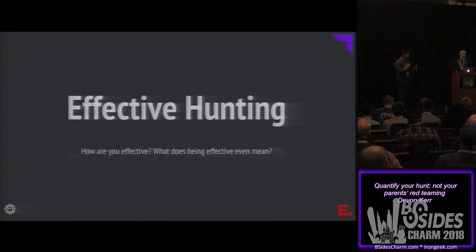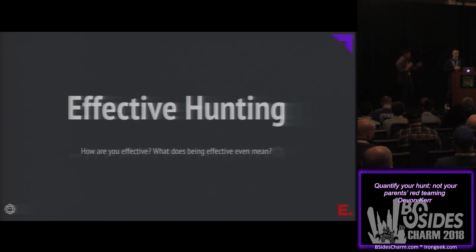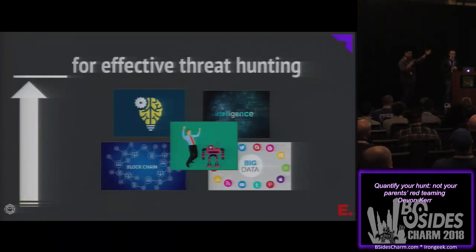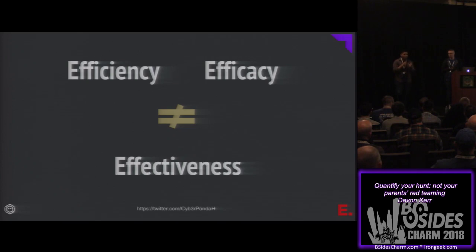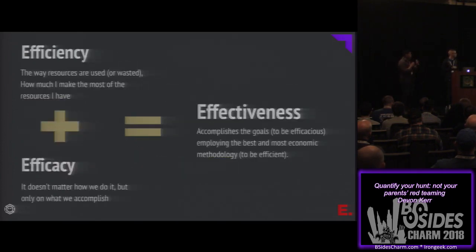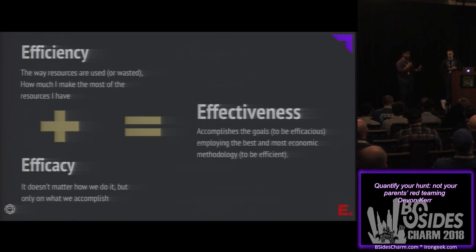When we start talking about effective hunting, anything sounds like 'effective threat hunting' if you put a product or technique name in front of it. But what does that actually mean? After talking with Cyber Panda — that's actually my brother — we started defining terms. Efficiency and efficacy started arising from that conversation. We all focus on efficacy: I want to detect it, I want to get to it. But how are we actually doing it? We're not focusing enough on the efficiency part of what makes hunting effective.